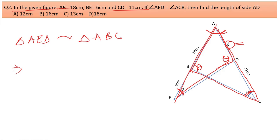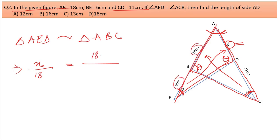Using properties of similarity of triangles: in triangle AED, opposite alpha is x, and opposite theta is 18 + 6 = 24. In triangle ABC, opposite alpha is 18, and opposite theta is x + 11. This gives the proportion: x/18 = 24/(x + 11).